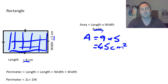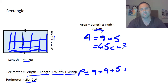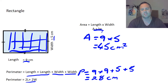Now if you're going to look at the perimeter of this shape, it's very similar. We have two widths on either side and two lengths on the other side, so we do length plus length plus width plus width — or more simply, 2L + 2W. So perimeter equals 9 + 9 + 5 + 5, which equals 28 centimeters. We don't use the squared unit here because we're talking distance, not area.